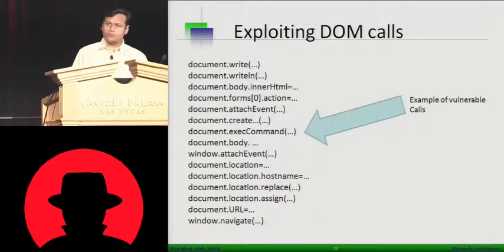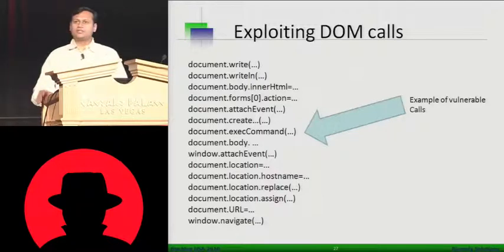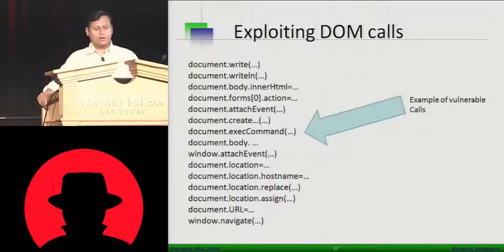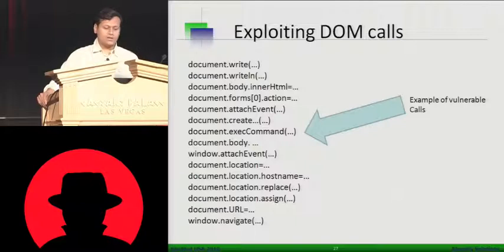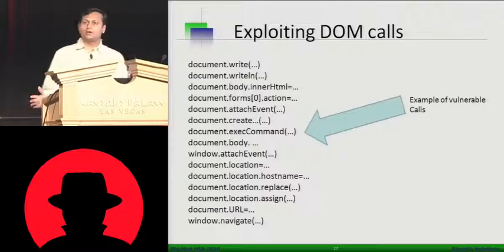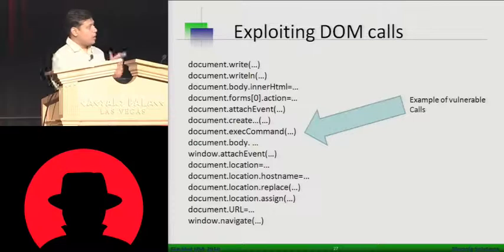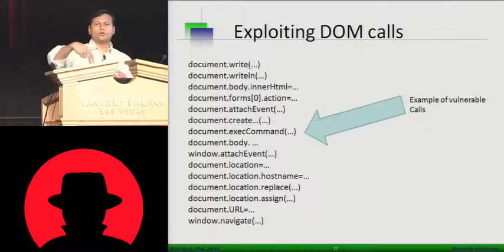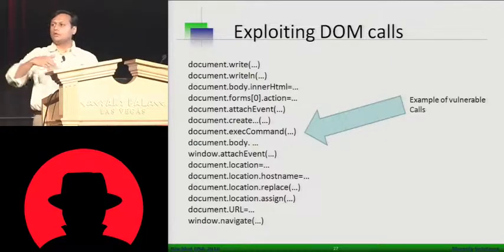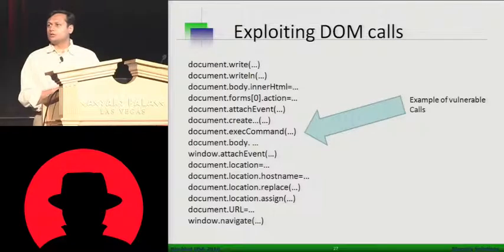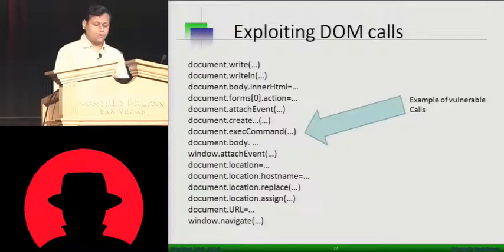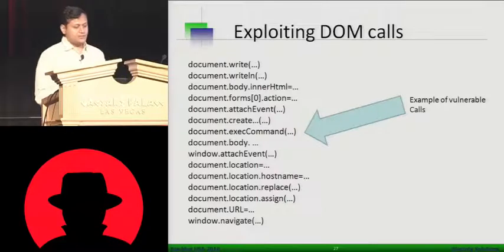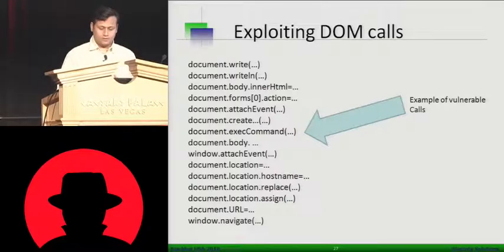There are a bunch of calls to look for when doing JavaScript analysis: document.write, document.writeln, body innerHTML, attachEvent, createExecCommand body — this is just a small list; there is a larger list out there. Depending on how a developer built the application, if you take something and put it into document.write and an actual script goes there, it's going to get executed on the browser's DOM. These are the exploitable calls from a DOM.